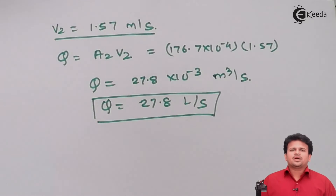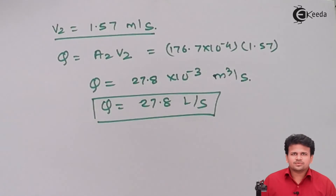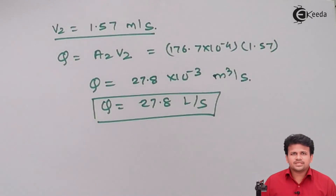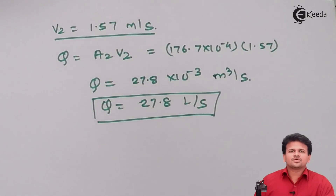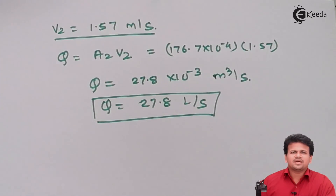In this problem, the unique aspect was that the fluid used for measuring pressure on an inclined plane had a specific gravity less than that of water. Hence, we had to modify our formula for a fluid with less specific gravity than water for the U-tube manometer. I hope you have understood how we calculated the discharge for an inclined Venturimeter. Thank you.